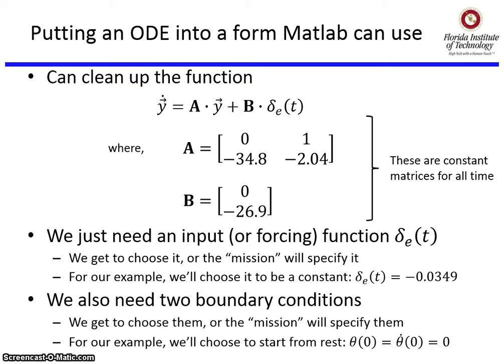We're also going to need two boundary conditions. We get to choose them, or the mission will specify them. For our example, we'll start the system from rest: θ(0) = 0 and θ̇(0) = 0.